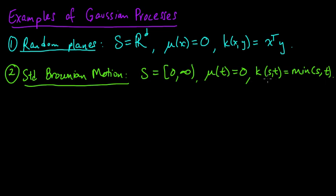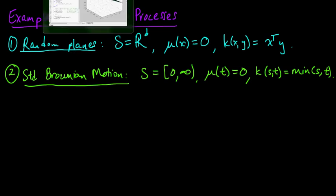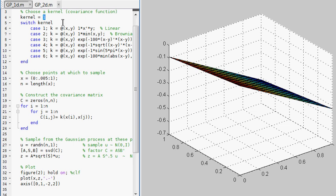when we define covariance functions, you can prove that this is, in fact, a valid covariance function. This is our standard Brownian motion. And I have set up in our script over here. Let's go back. I have set up kernel 2 is Brownian motion.